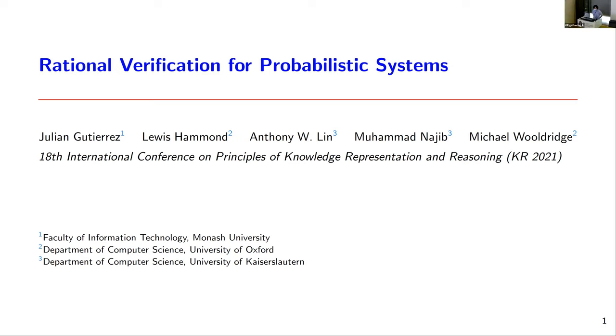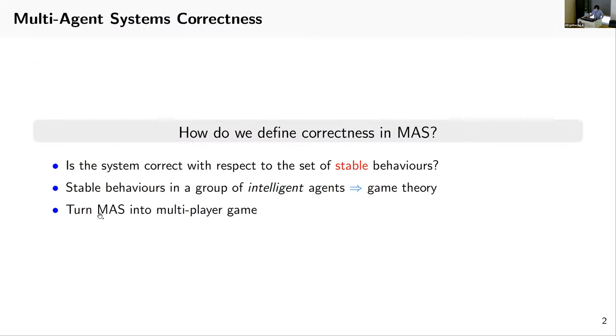I will be presenting our paper on rational verification for probabilistic systems. This is joint work with Julian Gutierrez, Lewis Hammond, Anthony Lynn, and Michael Wooldridge. We start with the question: how do we define correctness in multi-agent systems? This can be rephrased as: is the system correct with respect to the set of stable behaviors? Analyzing stable behaviors in a group of intelligent agents can be done using game theory. In doing so, we turn multi-agent systems into multiplayer games.